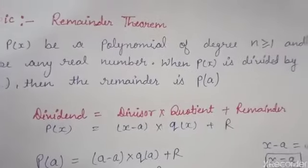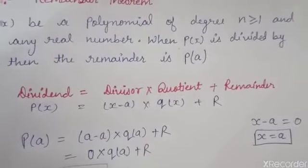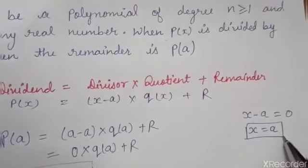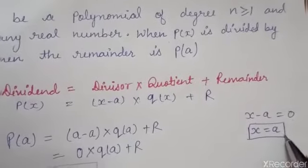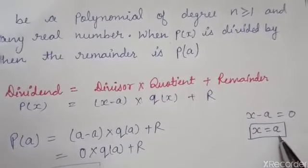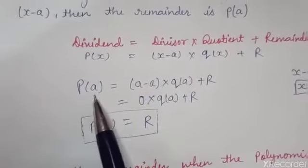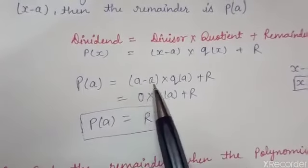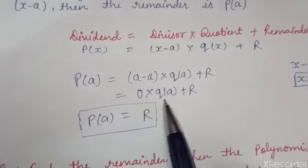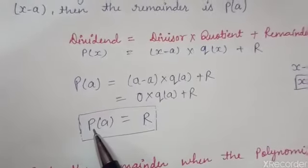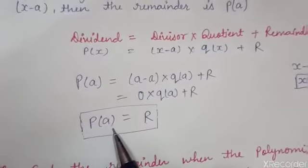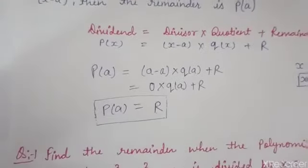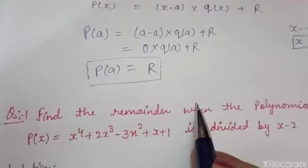Firstly, we equate the divisor equal to 0 to find the zero of the divisor. So we get X minus A equal to 0, which gives X equal to A. X equal to A is the zero of the divisor. Now, putting this value into the equation, we get P of A equals A minus A into Q of A plus R. A minus A cancels out and equals 0. So the value of the polynomial at A equals the value of the remainder. This is the statement of the remainder theorem.